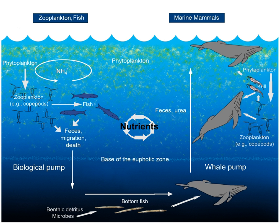Therefore, these chemicals are recycled instead of being lost, and are replenished constantly, unlike an open system. The flow of energy in an ecosystem is an open system — the sun constantly gives the planet energy in the form of light, while it is eventually used and lost in the form of heat throughout the trophic levels of a food web.